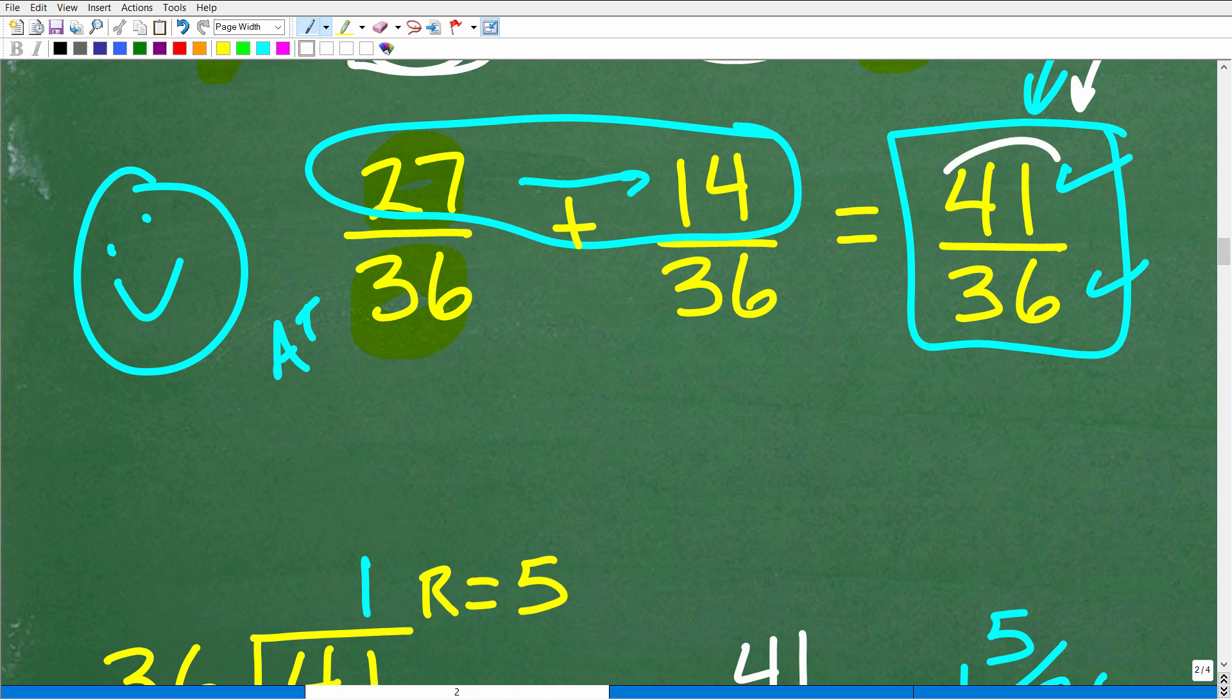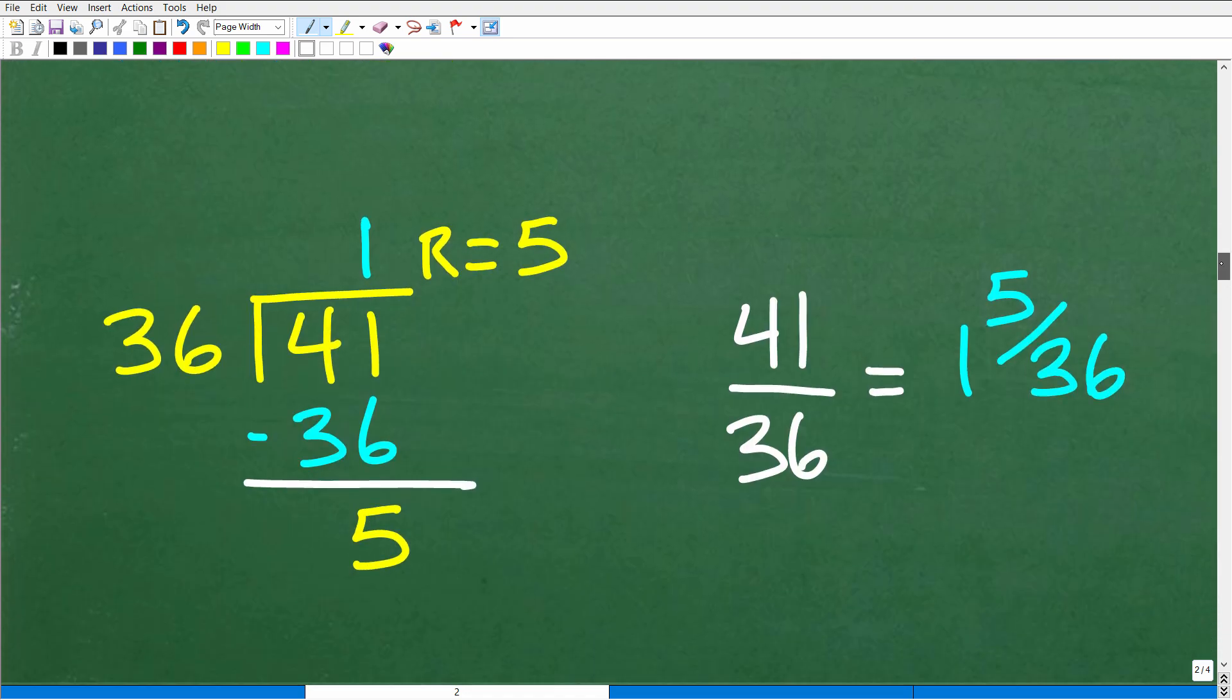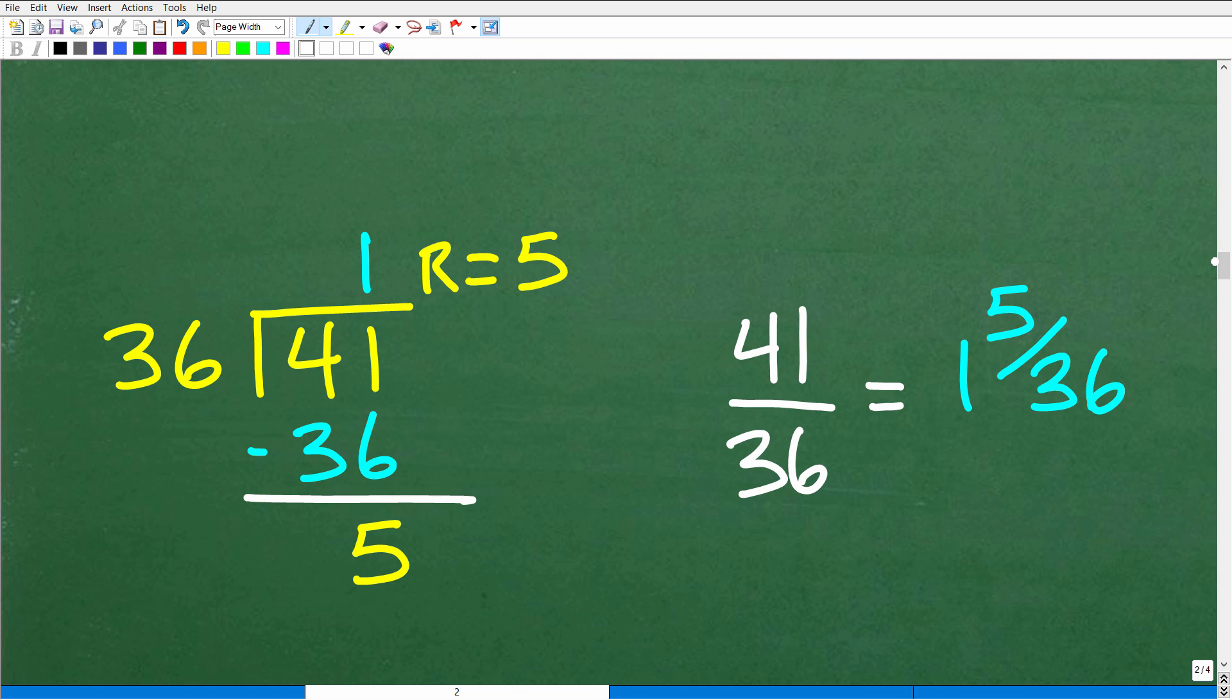And we've got to use some old school paper and pencil division to do this. So 41 divided by 36. Well, 36 goes into 41, 1.